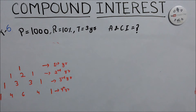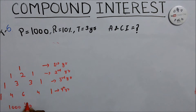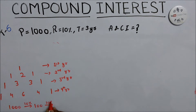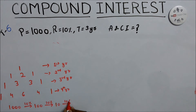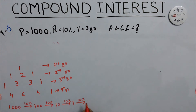Now we calculate base values: 10% of 1000 equals 100; 10% of 100 equals 10; 10% of 10 equals 1; 10% of 1 equals 0.1.